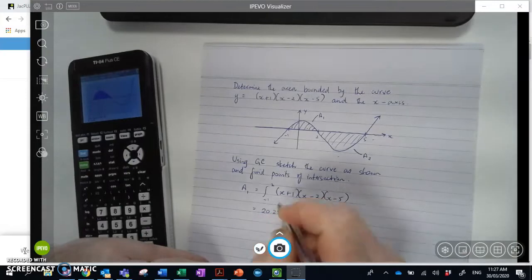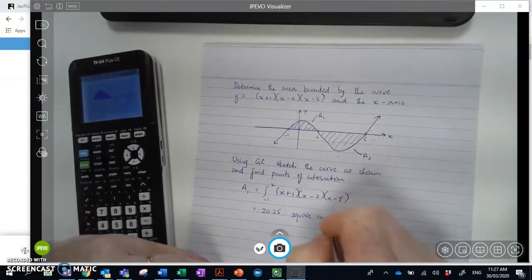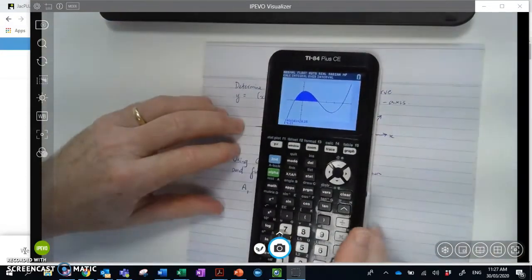Now being an area, we put in the square units there. Okay. We can then repeat the process here.